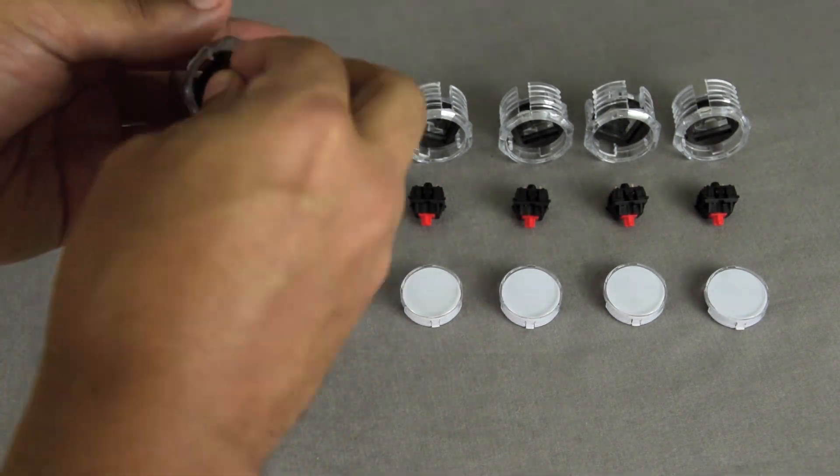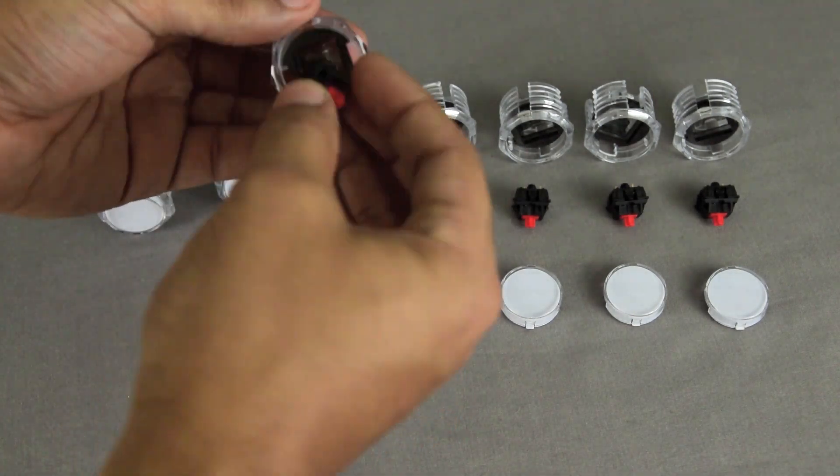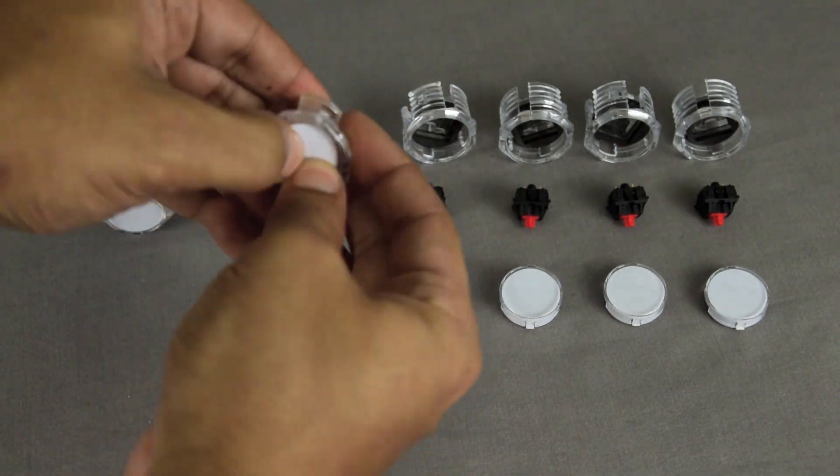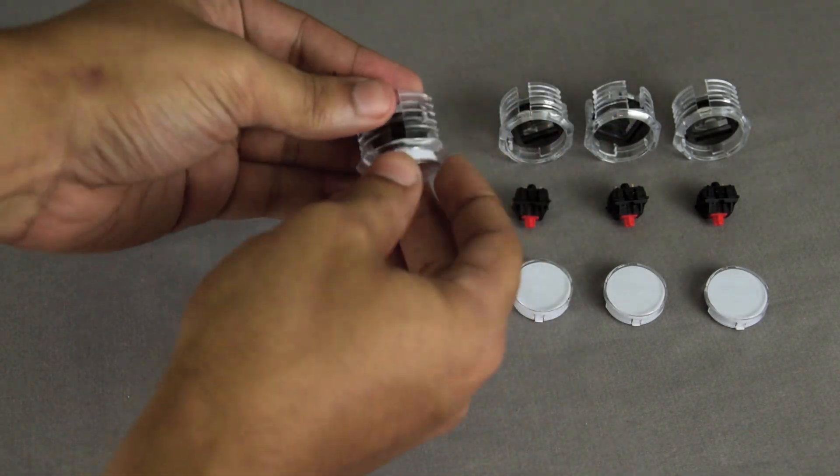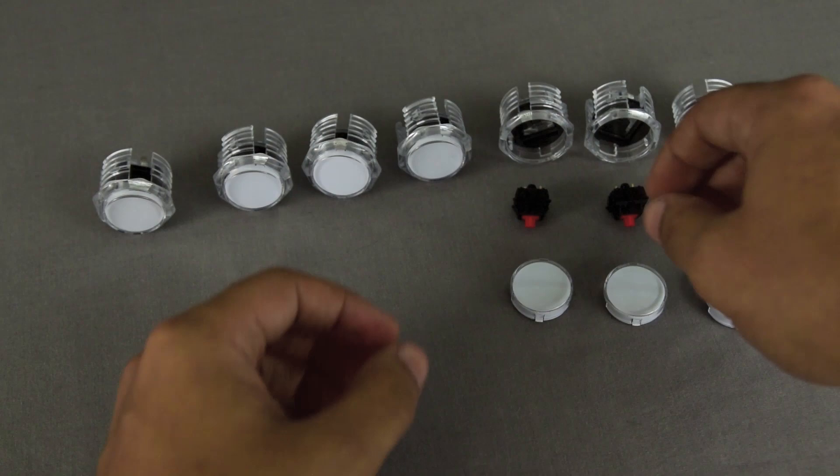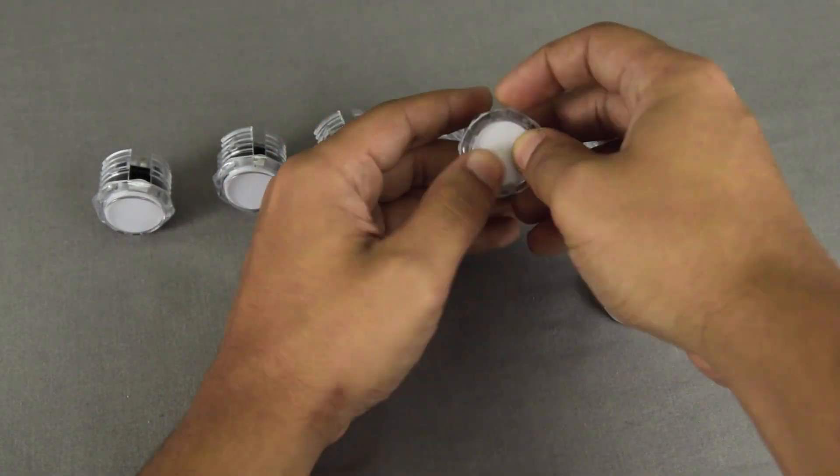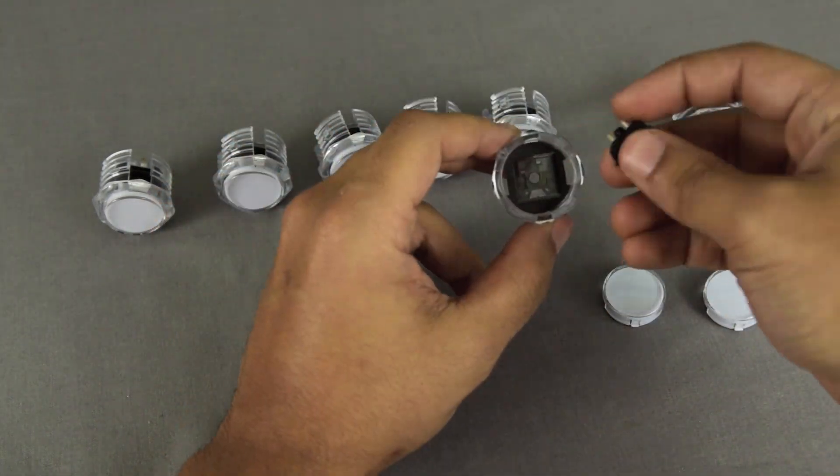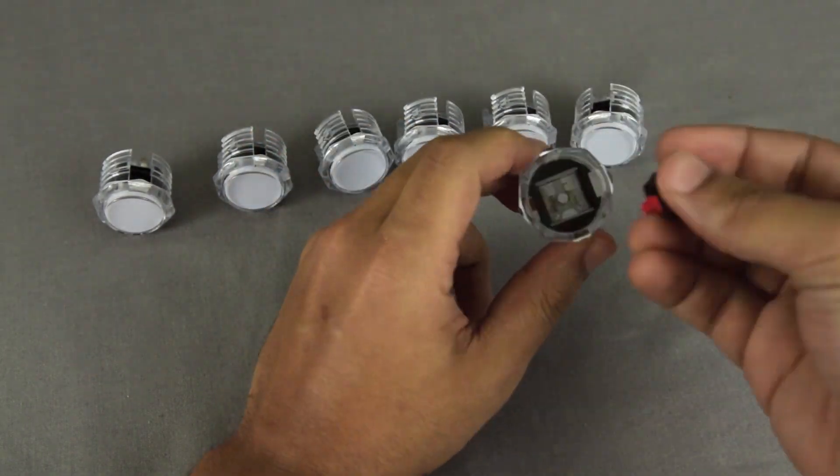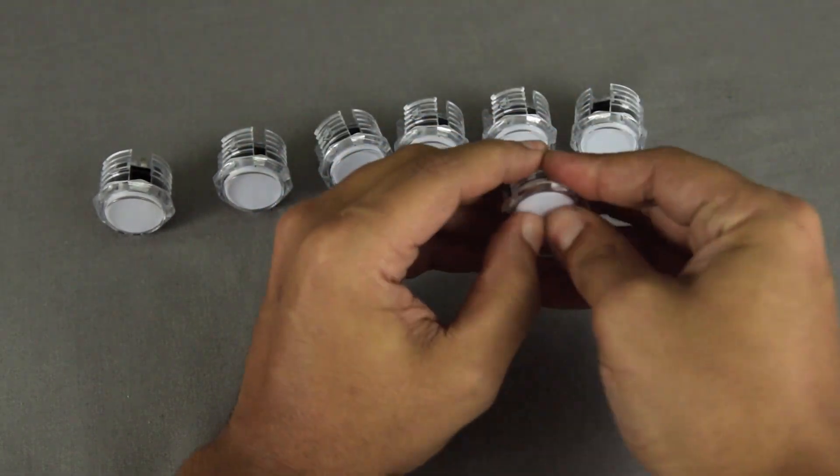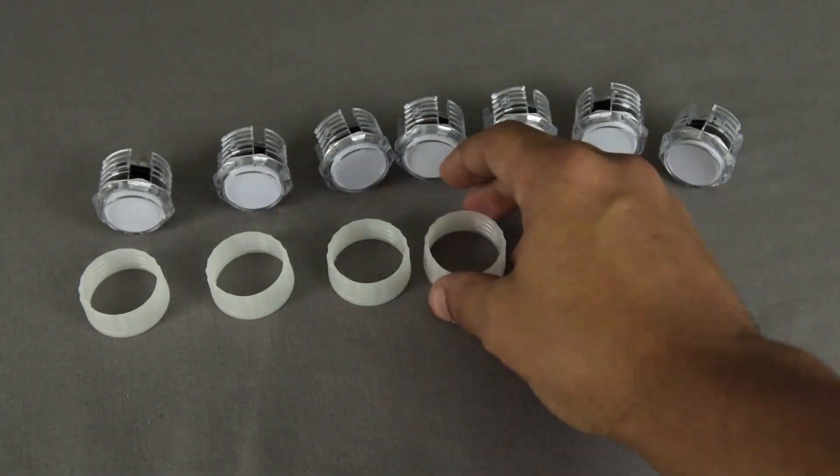You're totally impressed with how fast and completely believable my assembly speed is, aren't you? This is a mildly time consuming process, so instead of continuing to pull your leg about how quick I am, despite the fact that this has blatantly been edited, try not to rush through it. There's a lot of parts going on here, and you'll want to make sure that everything is properly seated. The last thing that you want is to get everything installed and find out that one of your buttons doesn't work. You can't forget the lock rings either. They're pretty important.